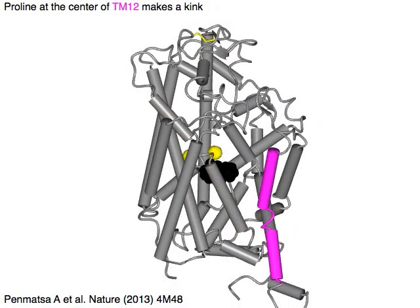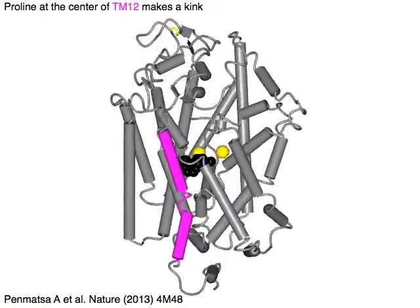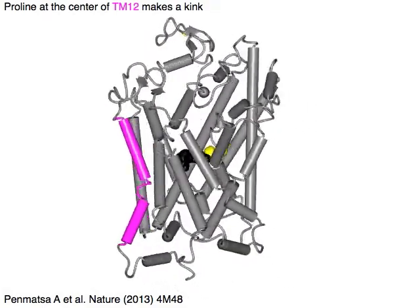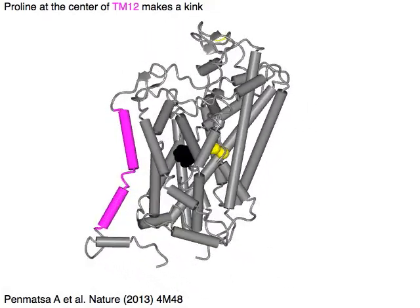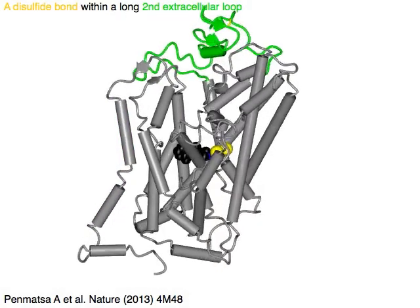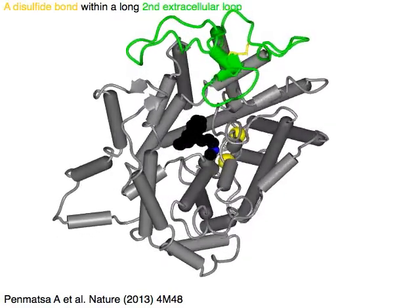Proline at the center of TM12 in magenta makes a kink. There is a disulfide bond in yellow within a long second extracellular loop in green.